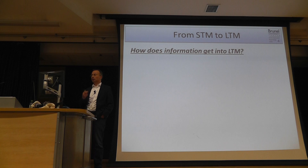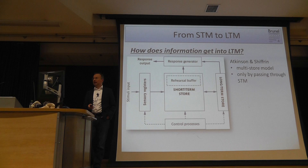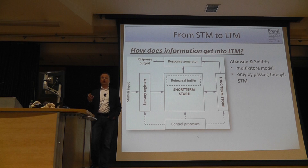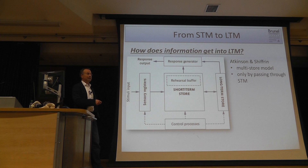How does information get into long-term memory? Referring to the Atkinson and Schiffrin multi-store model, it is assumed that we can store information in long-term memory only by passing it through short-term memory. Short-term memory is conscious memory, so only information which we have consciously processed, at least briefly, can enter long-term memory.